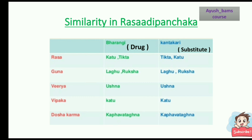I will explain in detail the table provided. I have taken the drug Bharangi and its substitute Kantakari. Why is Kantakari chosen? Because of many similarities: in Rasa, both have Katu and Tikta; in Guna, both have Laghu and Ruksha; in Virya, both are Ushna; in Vipaka, both have Katu; and for Dosha karma, both have Kaphavata-ghna. Without these many similarities, we could not use this as a substitute.